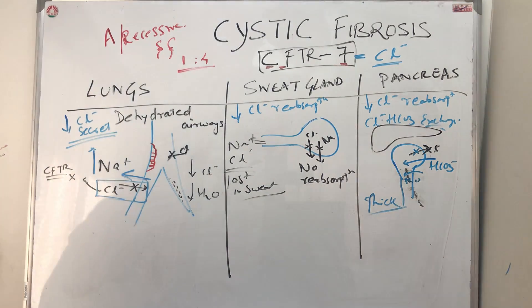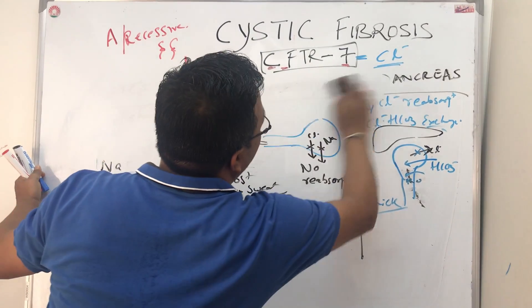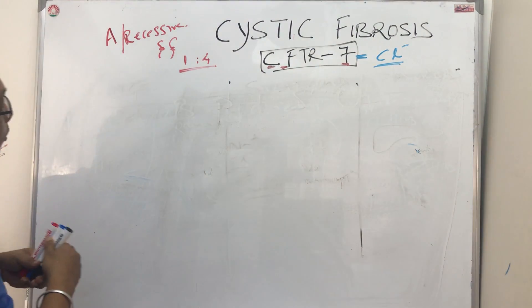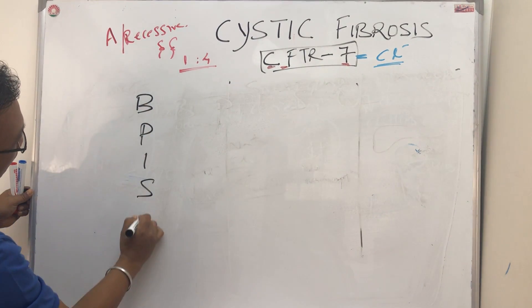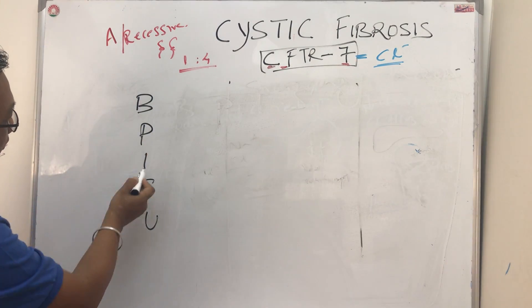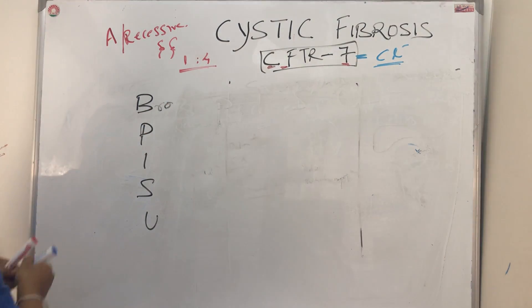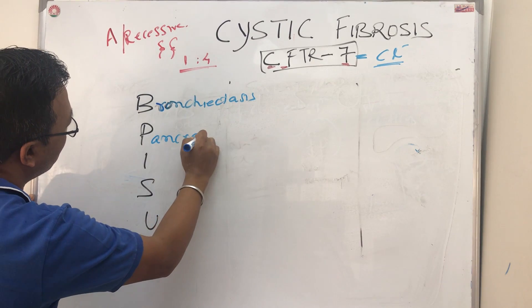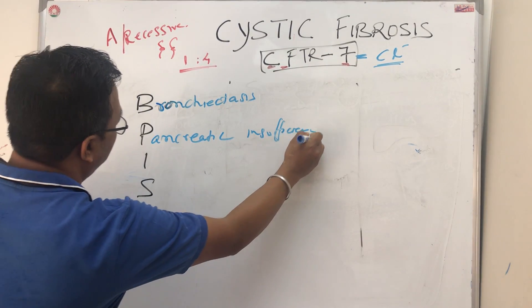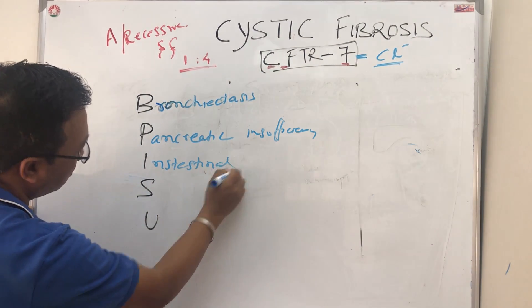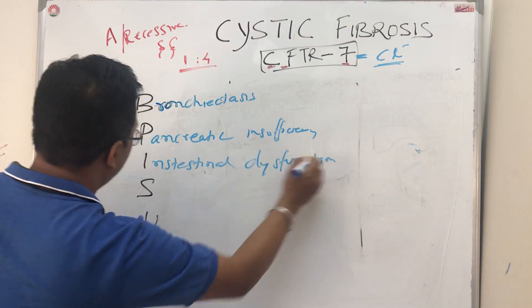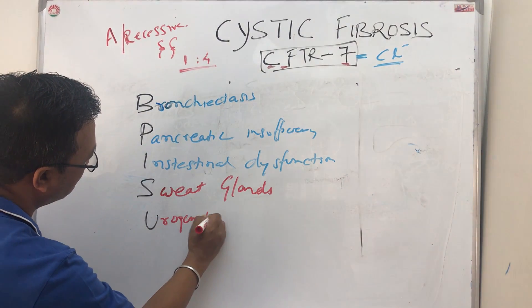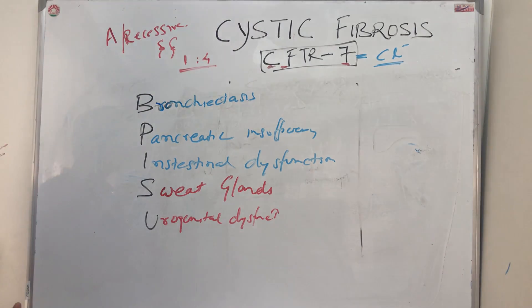Now let's discuss the clinical features. To remember the clinical features, use the mnemonic: 'Blood Pressure Is So Underestimated.' B for Bronchiectasis, P for Pancreatic insufficiency, I for Intestinal dysfunction, S for Sweat glands, U for Urogenital dysfunction. When you write the clinical features, write them under these five headings.